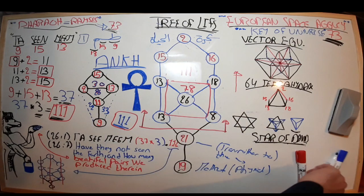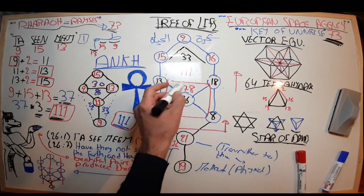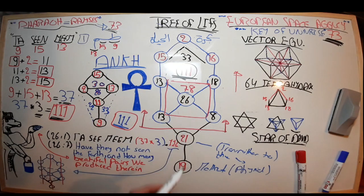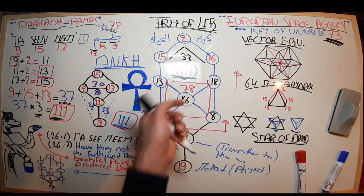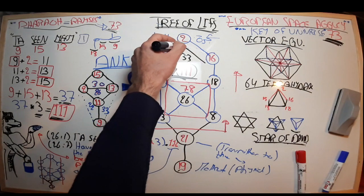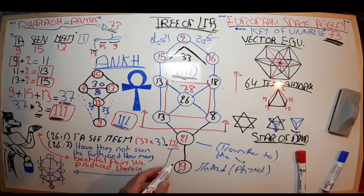How about this? 33. 33 plus 78, I'm getting 111. So part of this Ankh is working as the unlocker to the Tree of Life. And when you unlock this part, what are you getting? 33 plus 21 plus 19, you're getting 73, which is the key of the universe, and by which the Ramses and the pharaoh names were chosen upon.